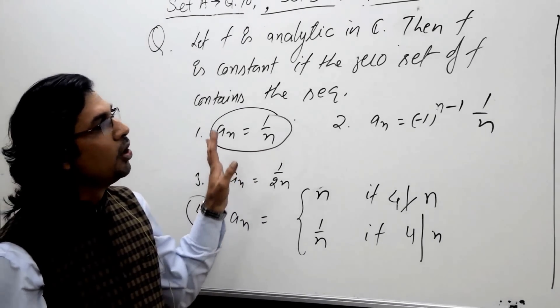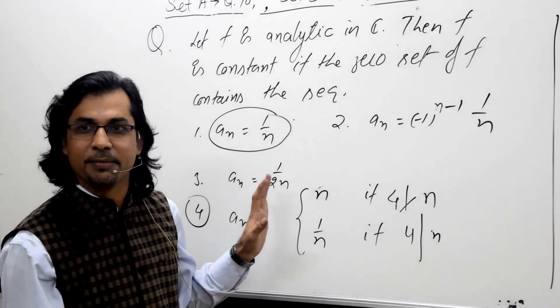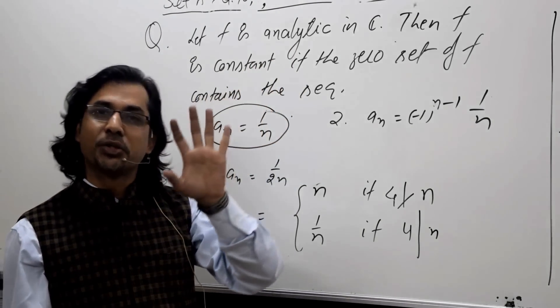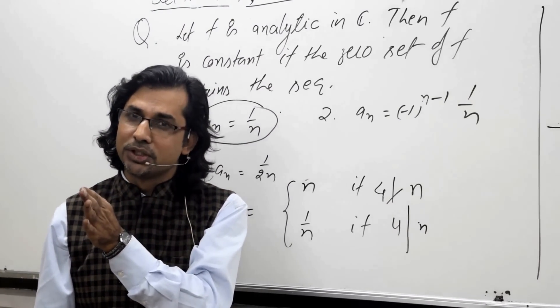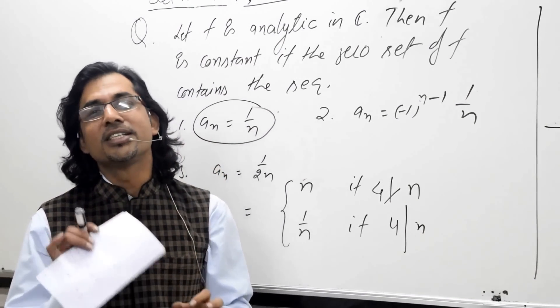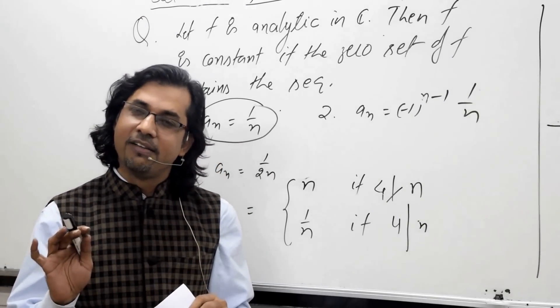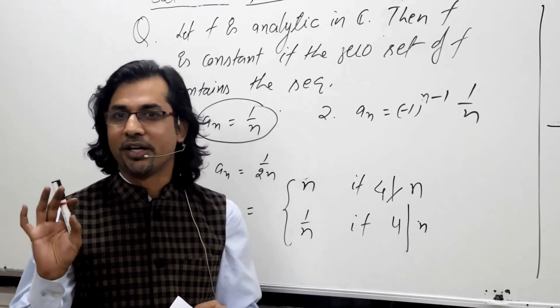So for this example, all four options are correct. The key one was this. Every year they ask questions over identity theorem. When they are asking questions over identity theorem, we just need to find if the function is 0 on a set, whether it has a limit point or not. Thank you.